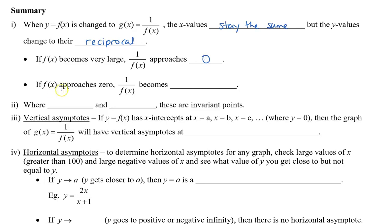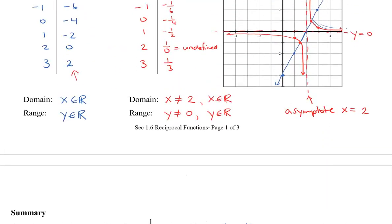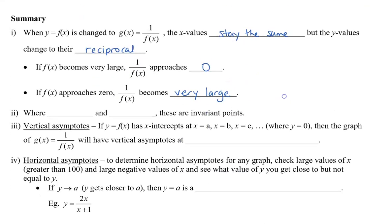In contrast, as the y value approaches 0, 1 over 0 becomes a very large number. As I showed in the last graph, there were two points where y equals 1 and y equals negative 1. When we take the reciprocal of those two points, they didn't change. So where y equals 1 and y equals negative 1, these are the invariant points.